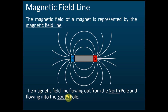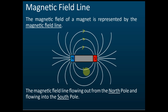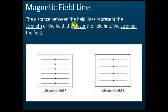The direction of the magnetic field line is from the north pole — it comes out from the north pole and flows into the south pole. So this is the north pole and this is the south pole, and the field line goes from north to south. The magnetic field comes out from the north pole and goes into the south pole.